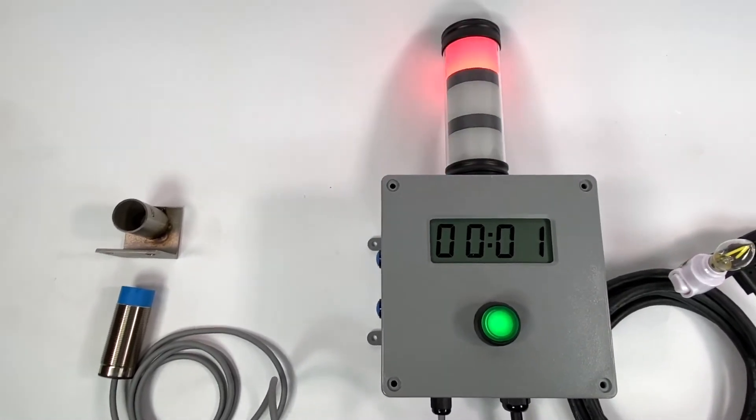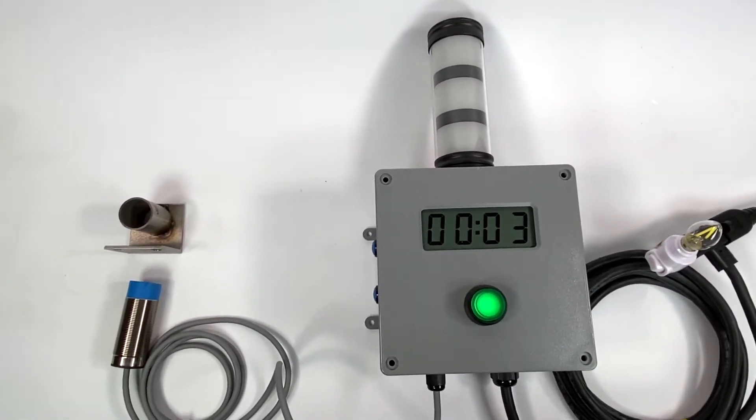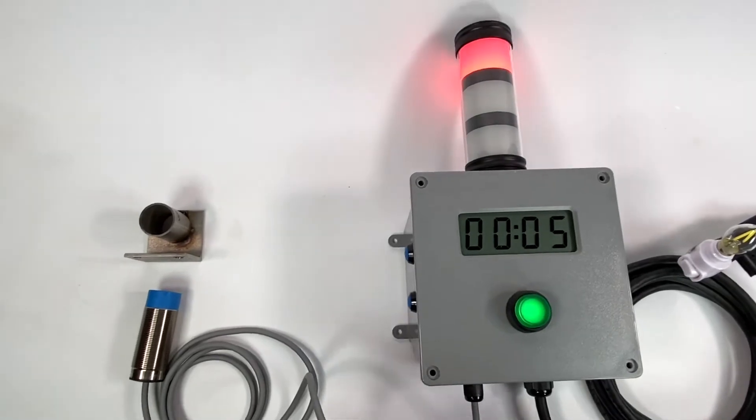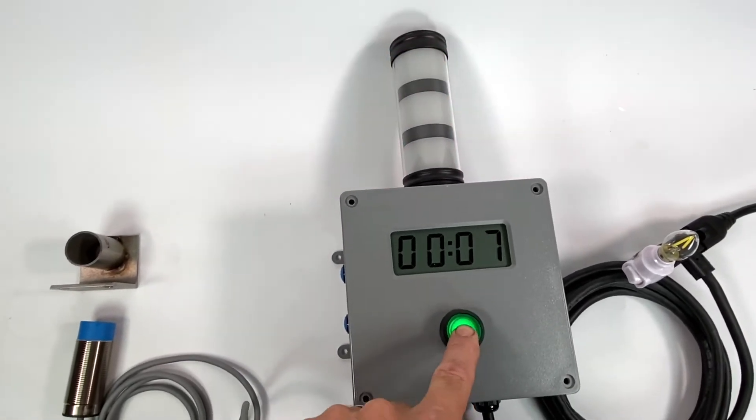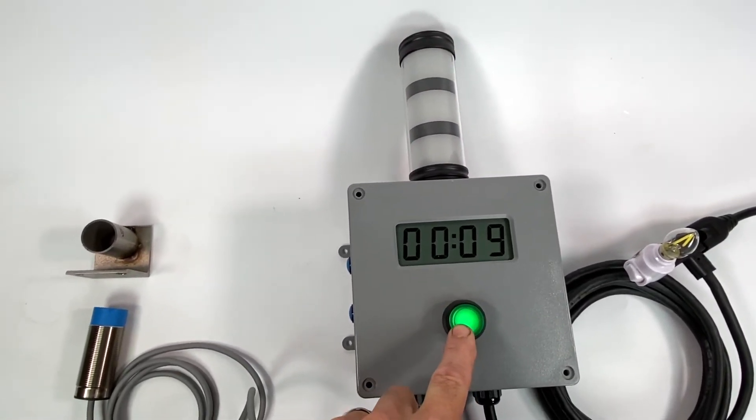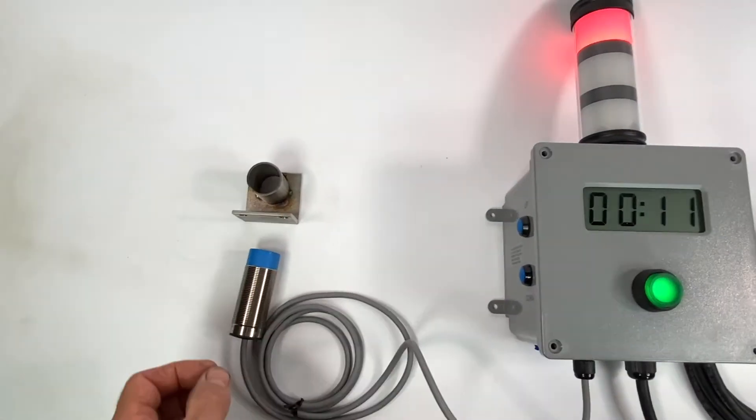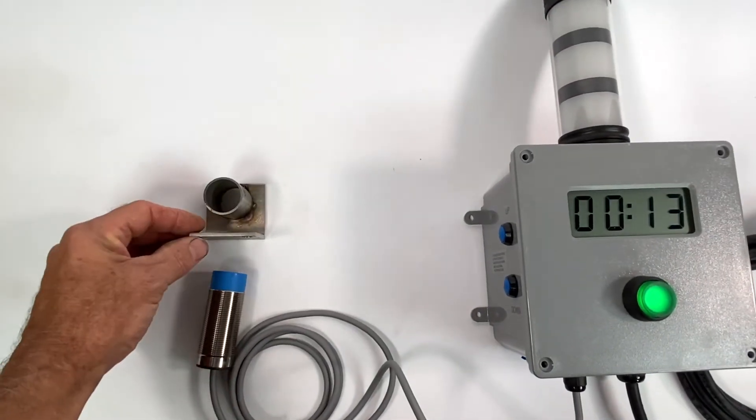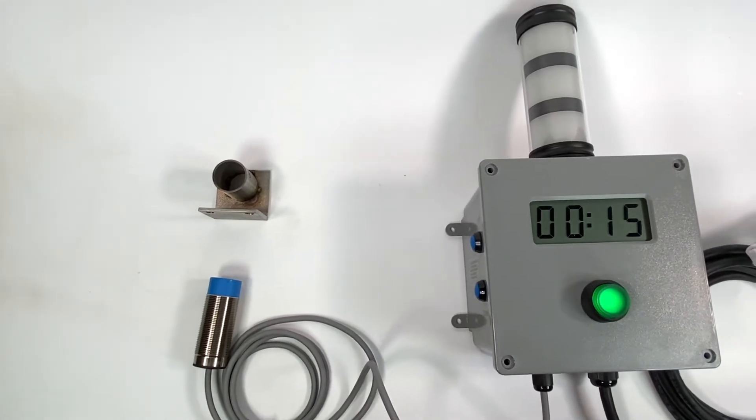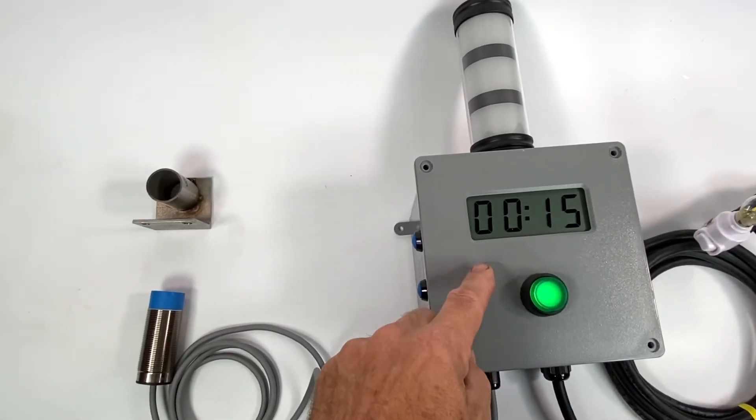There at the end of the cycle you get the buzzer and red light, and the only way to turn it off is you can't do it with the front button, that's just for setting the times. The operator must pull the bracket away from the proximity switch and then you can see the time is reset.